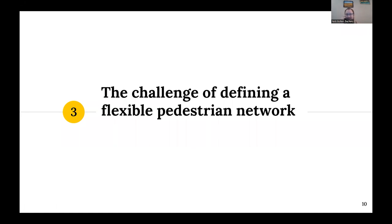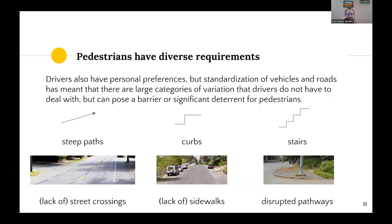The key challenge here is that pedestrians have diverse requirements. People who drive or operate vehicles on roads also have personal preferences, but because vehicles and roads have been standardized for one another, there are fewer categories of variation that drivers have to deal with. But there are quite a few that can pose a barrier or significant deterrent for pedestrians — things like steep paths, raised curbs, stairways, the lack of infrastructure like marked crossings, or a lack of sidewalks. In addition, many pathways are often disrupted by things like trees, or a pole that actually divides the path into much narrower pieces that might pose a barrier to a lot of people.